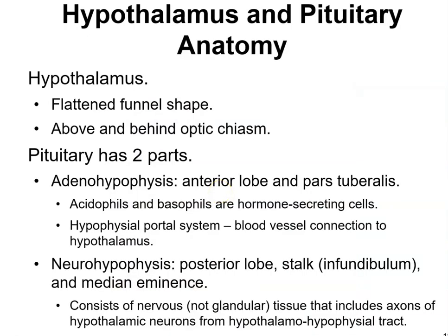The hypothalamus is a flattened, tunnel-shaped structure above and behind the optic chiasma. The pituitary gland has two parts: the adenohypophysis, which is the anterior lobe containing acidophils and basophils as hormone-secreting cells connected to the hypothalamus via the hypophysial portal system, and the neurohypophysis, which is the posterior lobe including the infundibulum and median eminence.